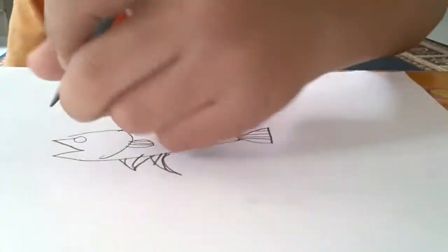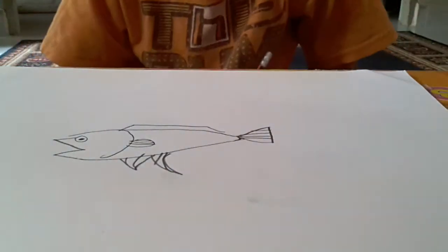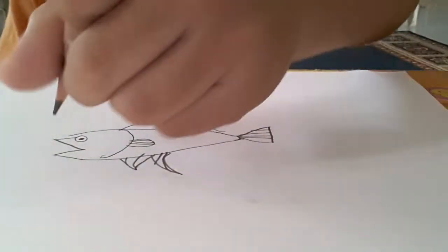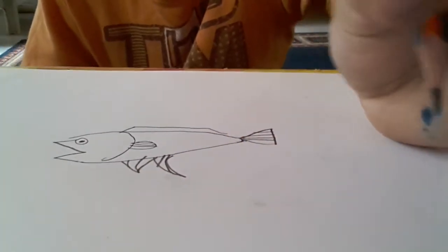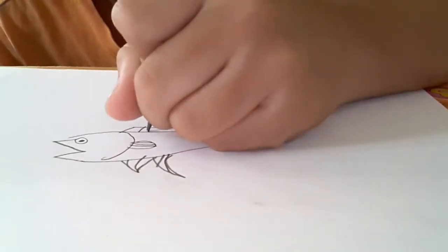Then you must remember that, and then draw the eye. There you go. If you want the body and tail, draw a line like this.